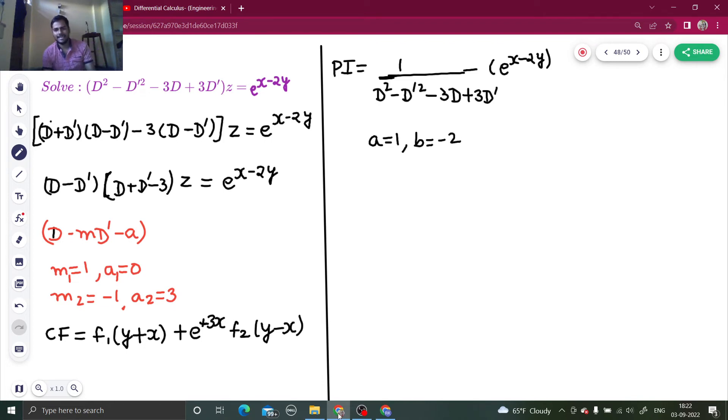Put d as a and d dash as b and check whether denominator is positive. If you put a in place of d, you get 1 minus minus 2 square minus 3 into 1 plus 3 into minus 2. You are getting 1 minus 30, so it is minus 12. My pi is e power x minus 2y divided by minus 12.